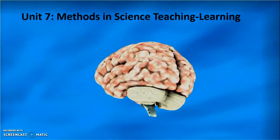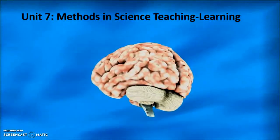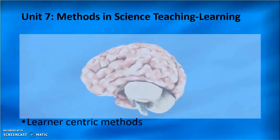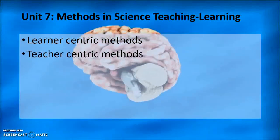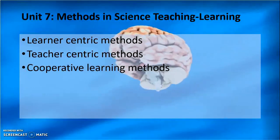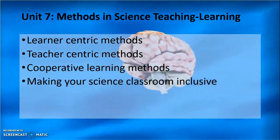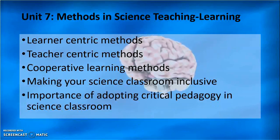Unit seven focuses on Methods in Science Teaching and Learning. Here we talk about different learner-centric methods, some teacher-centric methods, and cooperative learning methods. We also discuss how you can make your science classroom inclusive, and how to adopt critical pedagogy in a science classroom.